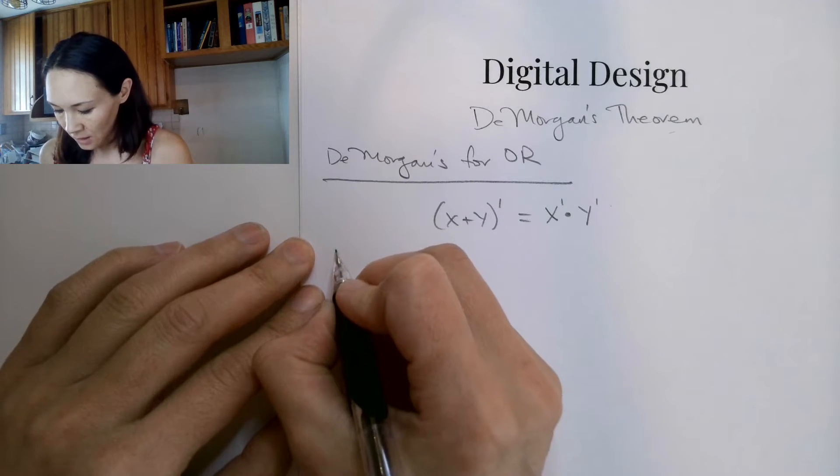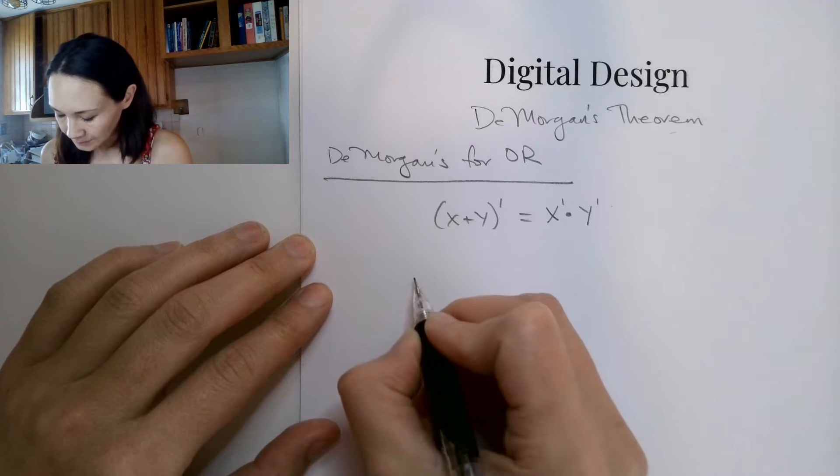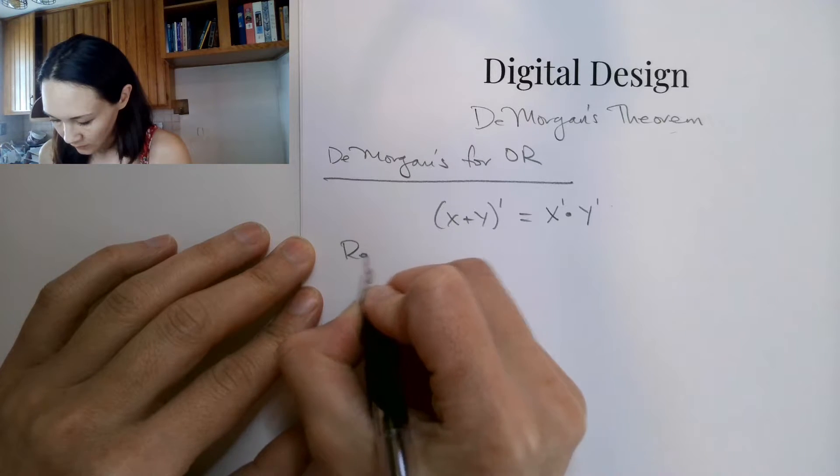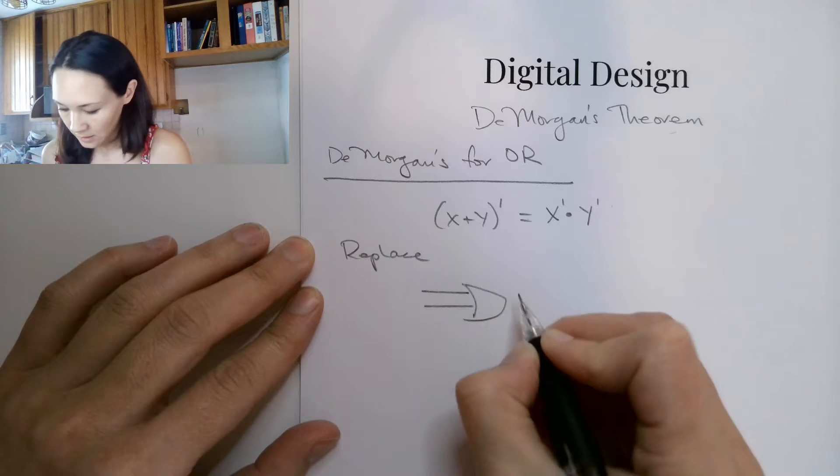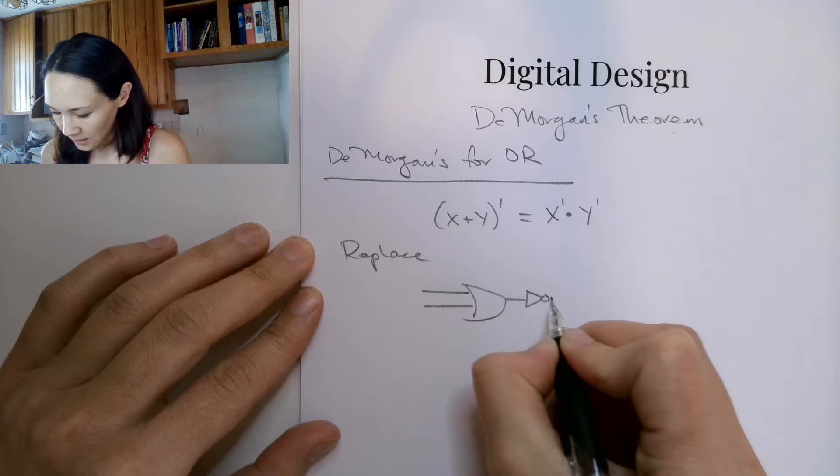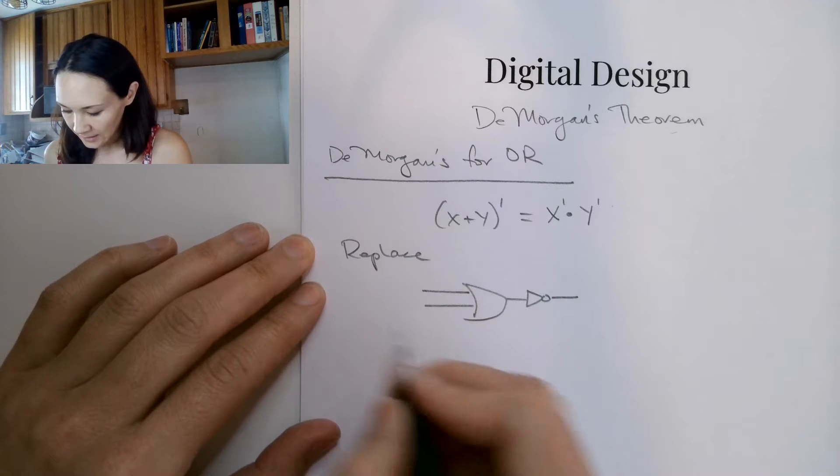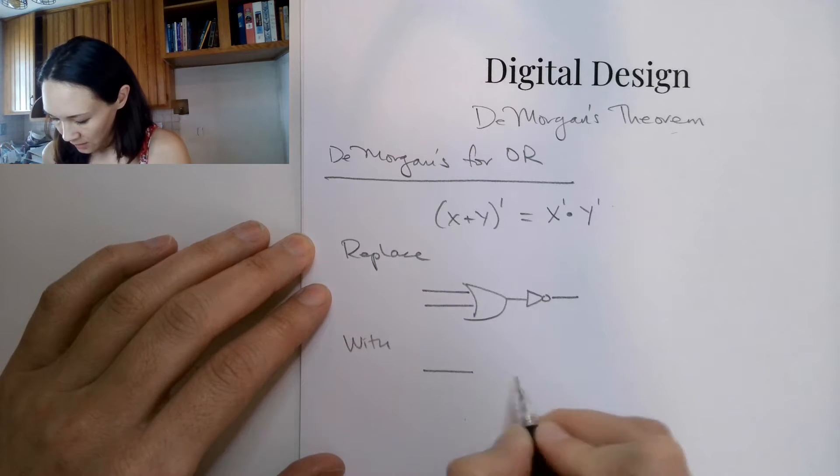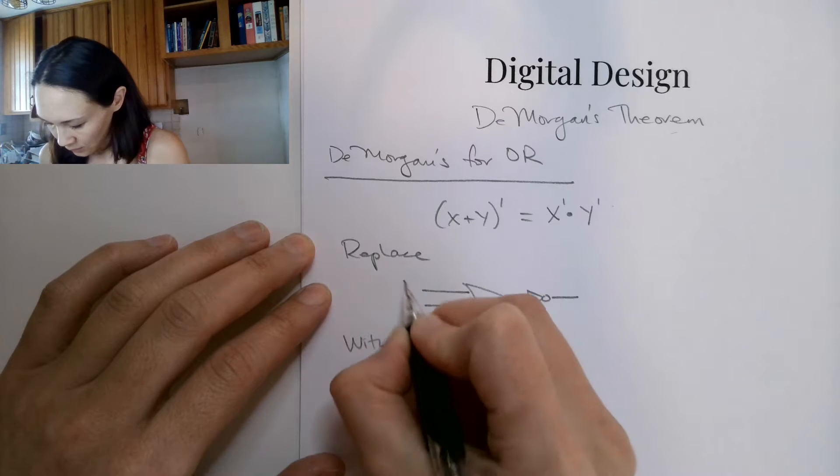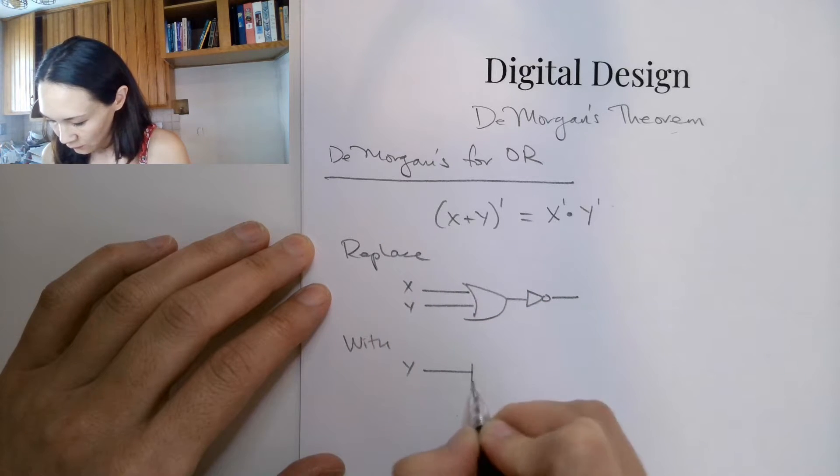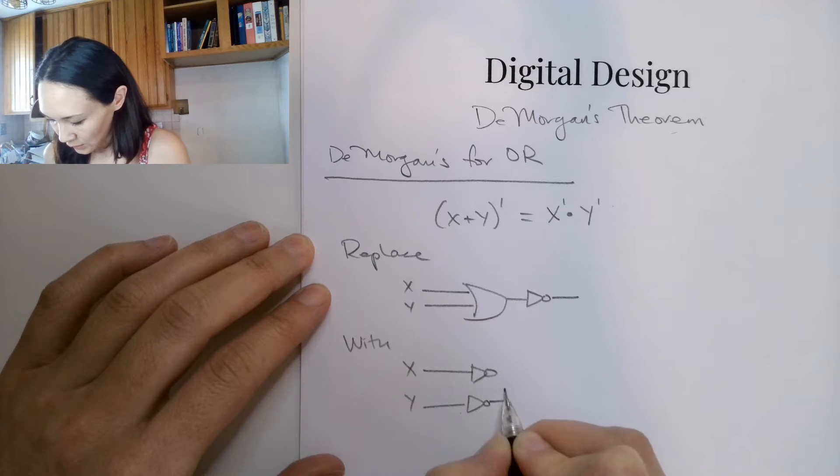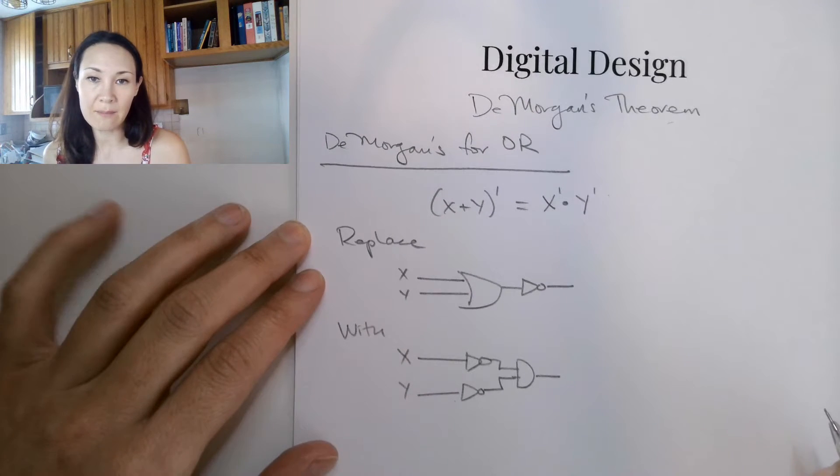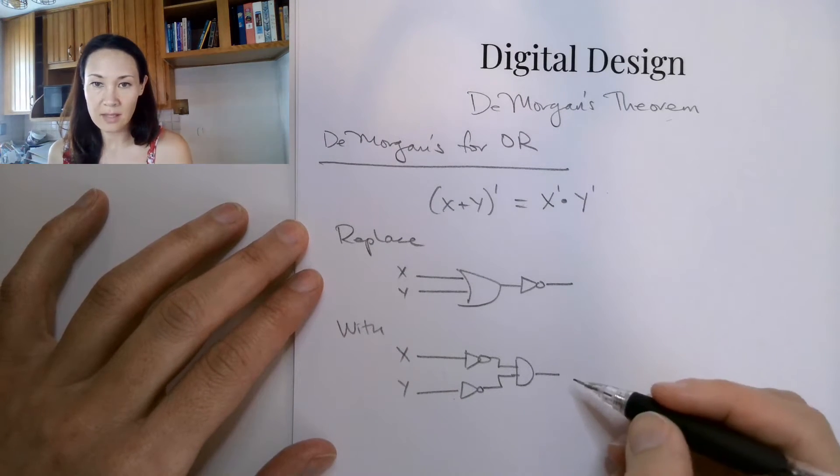So that means that if we have X and Y ORed, and then the output gets inverted, we can replace this with if we took X and Y, inverted them first, and then took those outputs of the inverter and ANDed them. So this circuit is equivalent to this.